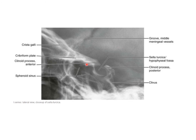This is a close-up view of the lateral skull x-ray. Here you can see the sella turcica, groove for the middle meningeal vessel, cribriform plate clearly, and the crista galli, then the anterior clinoid process and posterior clinoid process. You can also see the clivus, and just below the sella turcica you get the sphenoidal air sinus.